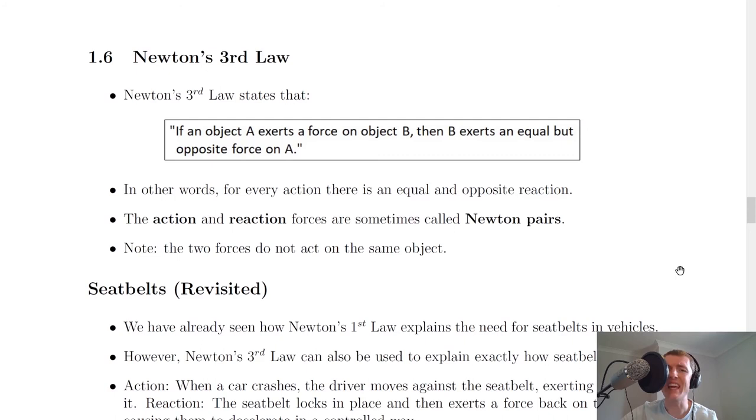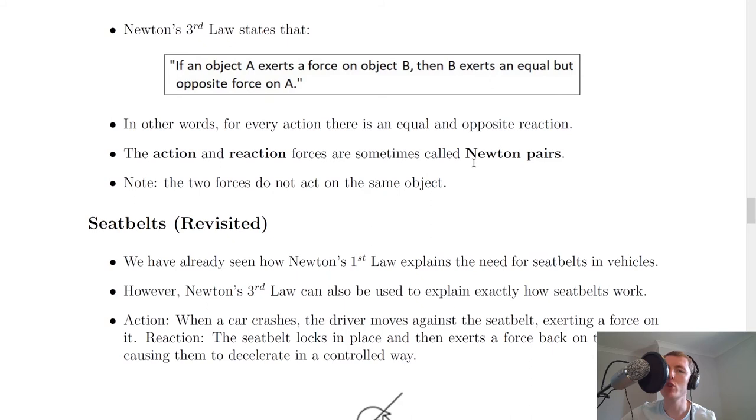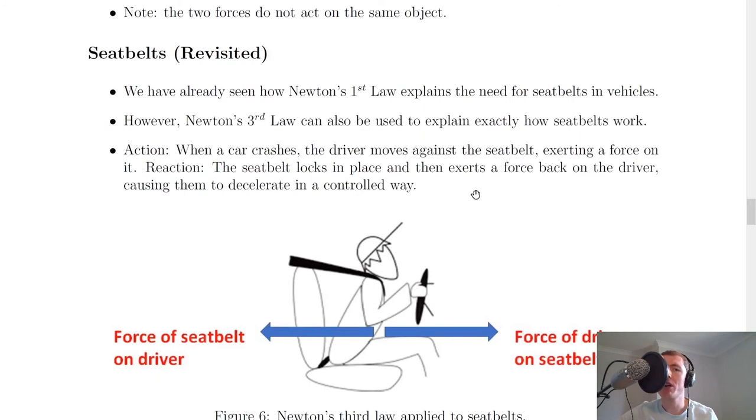Lastly we have Newton's third law, and Newton's third law states that if an object A exerts a force on object B, then B exerts an equal but opposite force on A. In other words, for every action there is an equal and opposite reaction, and that's probably the definition that you've heard before. You should be aware that the action and reaction forces are sometimes called Newton pairs, and note that when we're talking about Newton's third law and the two objects, the two forces do not act on the same object. So one force will act on one object, and the other force will act on the other object. We do not have both forces acting on the same object.